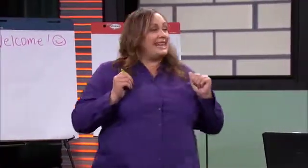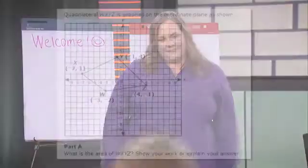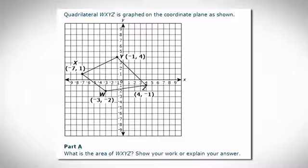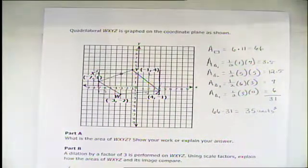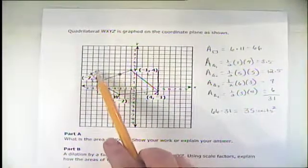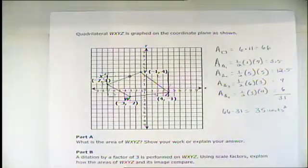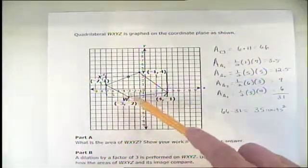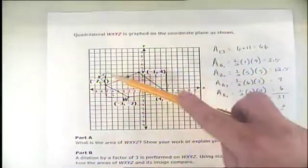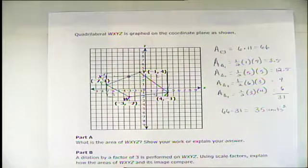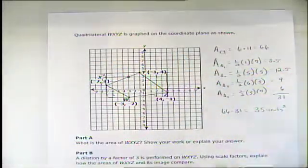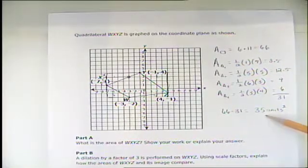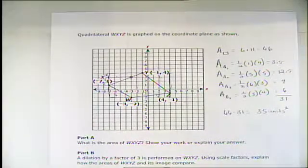We had a couple of different approaches, and I'm going to give you the one that ended up working out the best. This was Deidre's idea: she made a larger rectangle because she could tell that the quadrilateral was not a rectangle — these were not right angles. So she made a larger rectangle, which created four smaller right triangles. Since they were right triangles, it was easy to determine height and base. She found the entire area to be 66, calculated the areas of all the triangles, then subtracted: 66 minus 31 gave 35 square units.